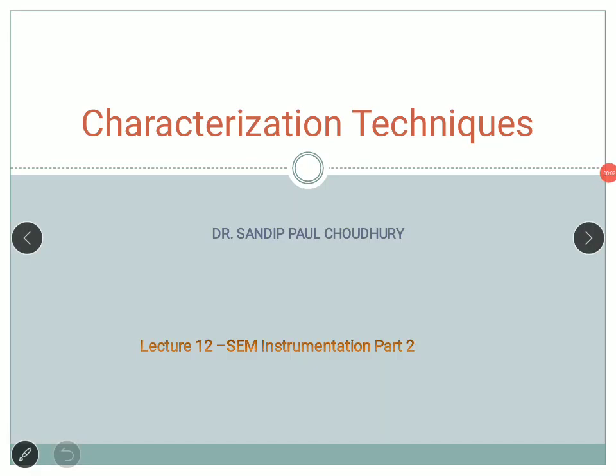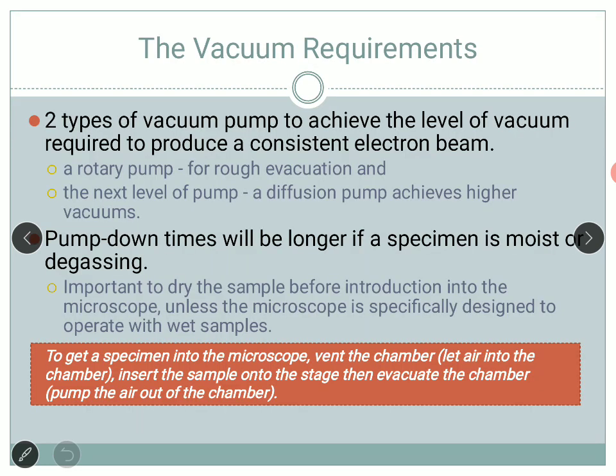We will start with lecture 12, which is the second part of SEM instrumentation. Here we are going to talk more about the different parts of the SEM device. In the last class we were about to start with the vacuum requirements. We already talked about the basic principle of SEM operation and we know that the column needs to be kept inside vacuum.